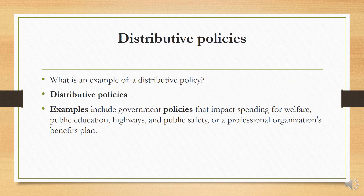Examples of distributive policies include government policies that impact spending for welfare, public education, highways, and public safety nets, or professional organization benefit plans. In Pakistan, examples of government distributive policies include public hospitals, schools, colleges, and infrastructure development.